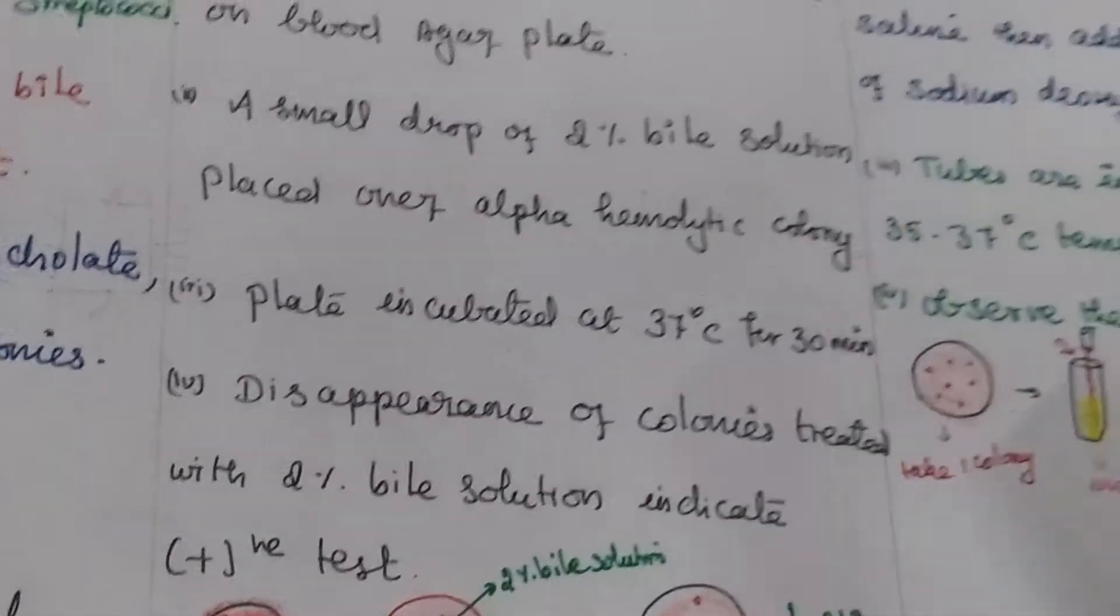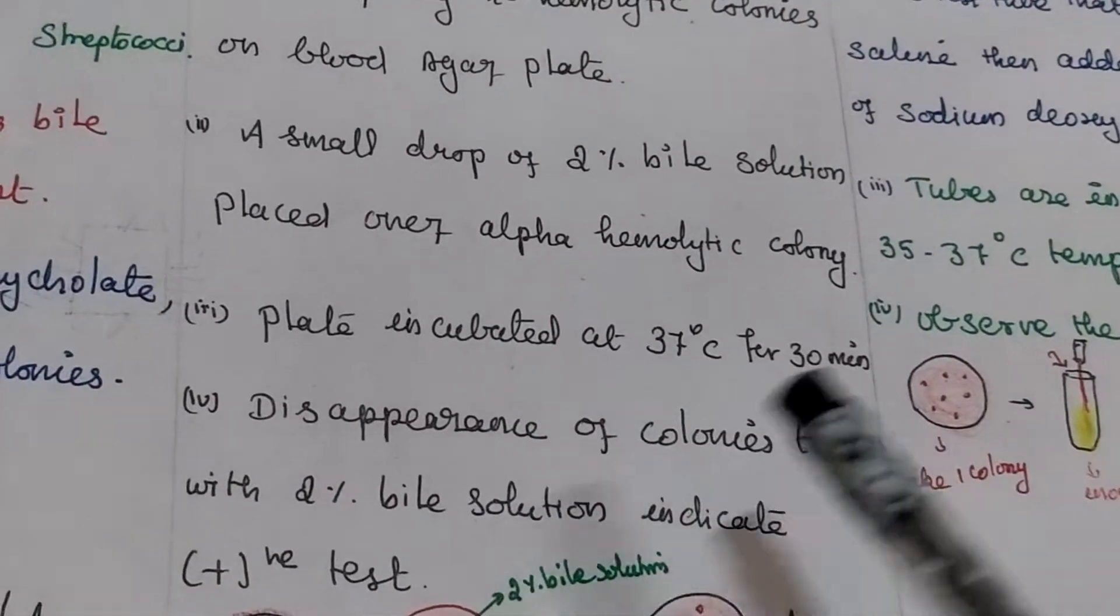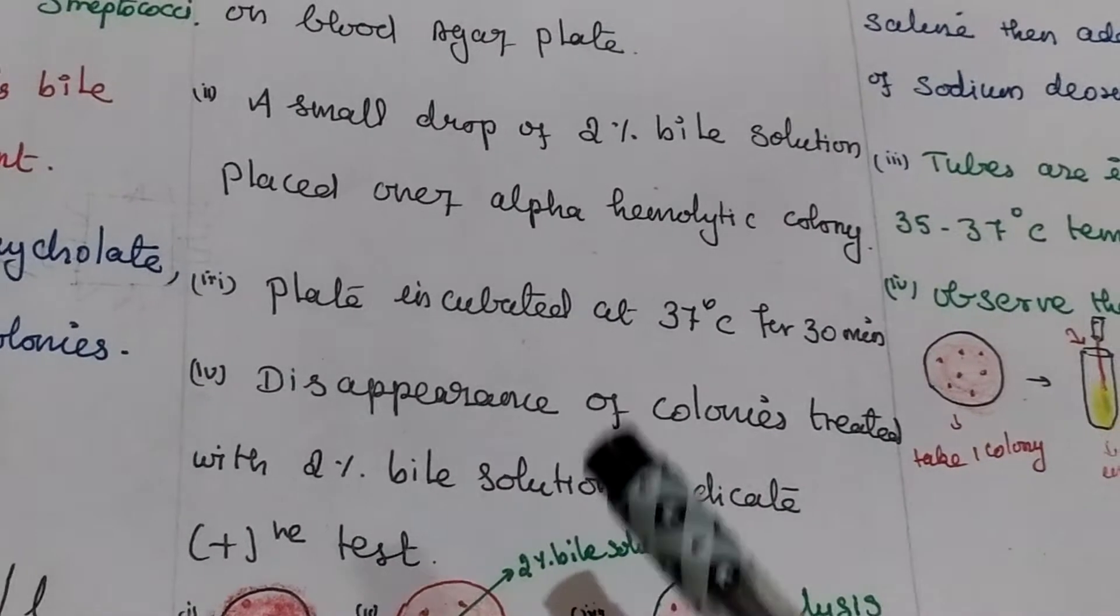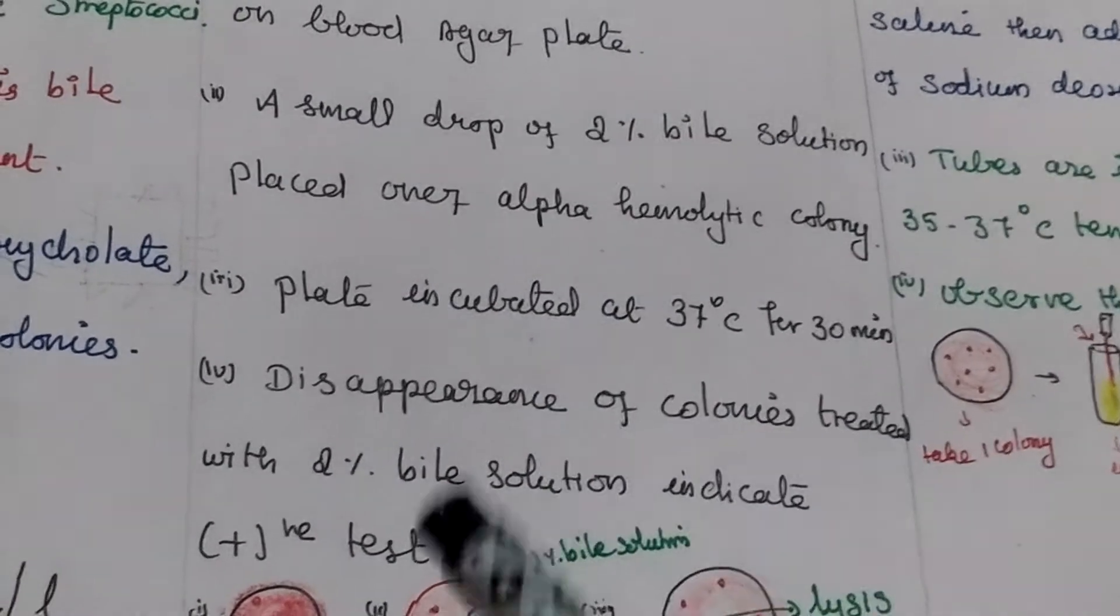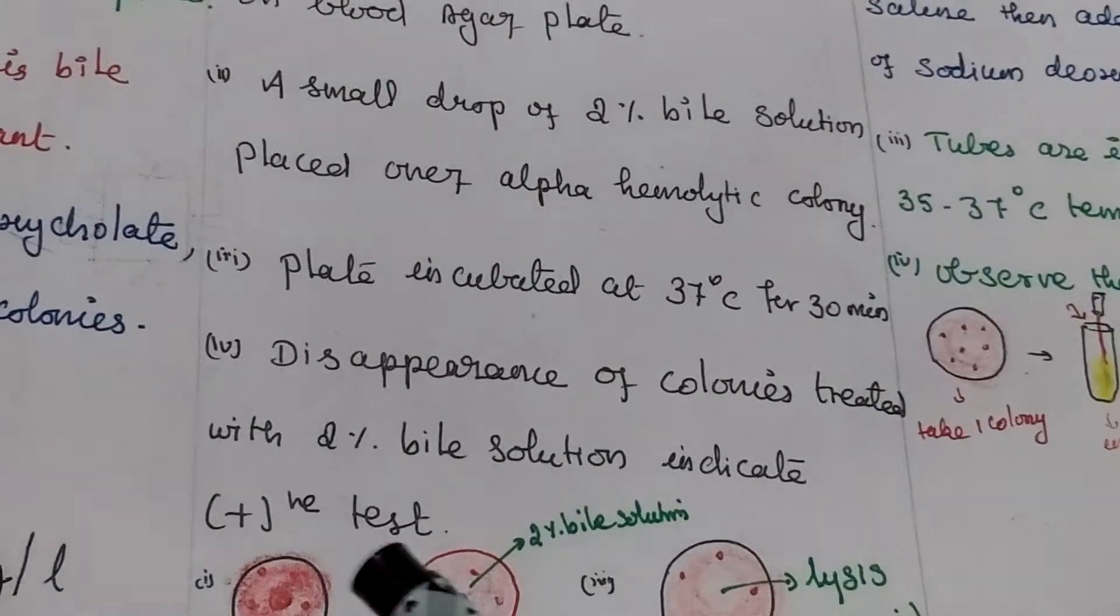Then that plate is incubated at 37 degrees Celsius for 30 minutes. Disappearance of the colony treated with 2% bile salt solution indicates a positive test.